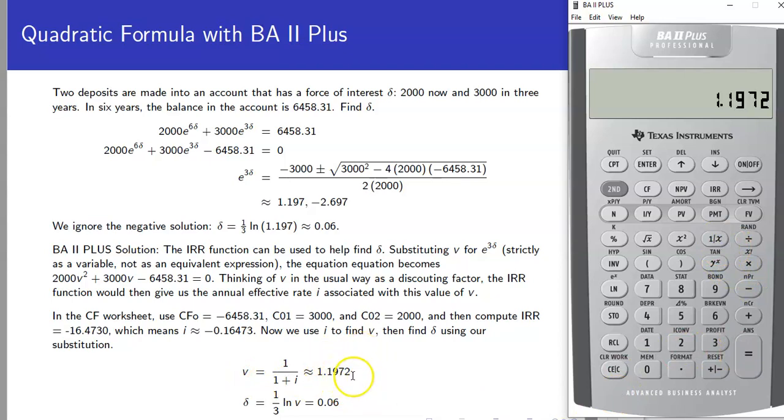Now, of course, it's not really a discounting factor here since things are increasing, but that makes sense for our purposes. Because remember, we used the v, thinking of the v as a discounting factor, to use the internal rate of return functionality. But now remember we got v by just making a substitution.